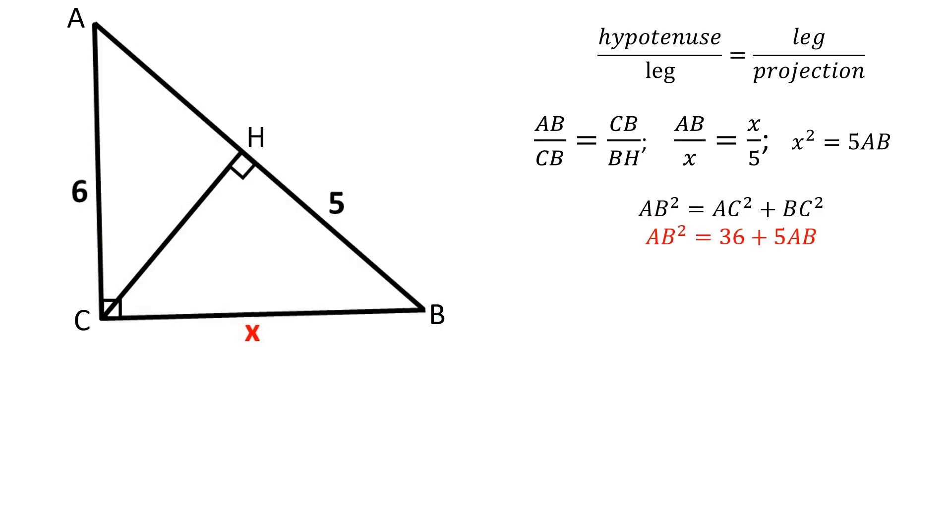Let's sub in the values. AB squared is equal to 36 plus 5AB.